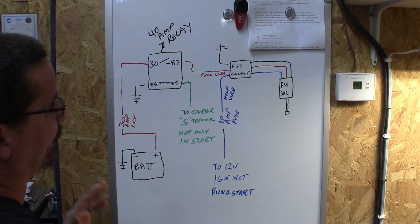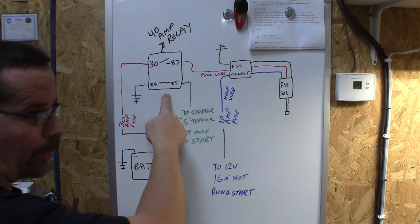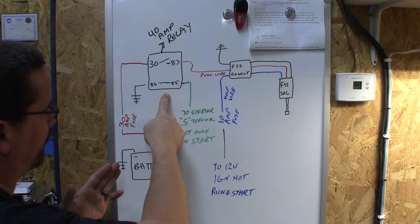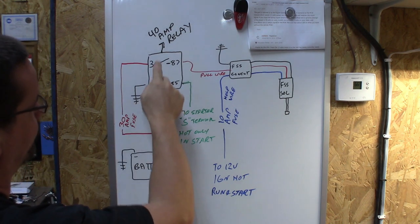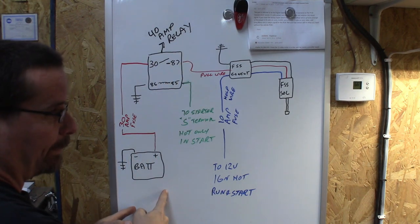To wire this up is relatively simple. What we need is a four prong 40 amp relay that you can get at any parts store and I've numbered the terminals here to see. How we wire this up starting at the battery.